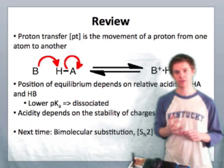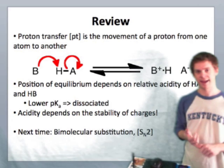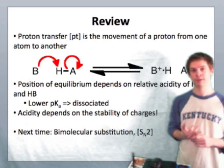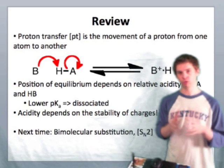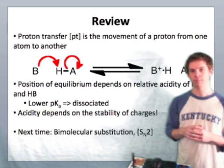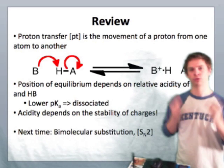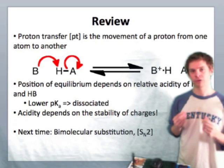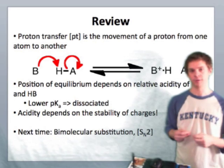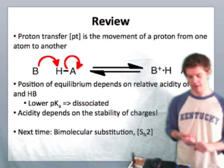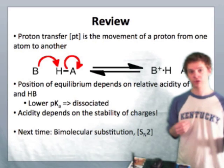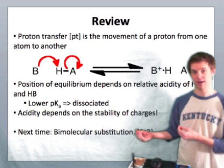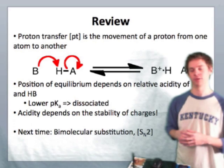And remember that acidity depends on the stability of charges, right? The stability of cations and anions. This is extremely important. When you look at an acid-base equilibrium, you can almost tune out the neutral species 90% of the time and look only at the charged species and ask yourself which one is more stable than the other. Use the factors we've talked about to determine which cation is more stable than the other or which anion is more stable than the other.